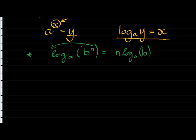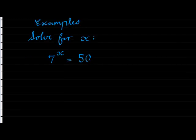Here's an example where we're asked to solve for x. The question gives us 7 to the power of x is equal to 50. Now we know 7 to the power of 2 will be equal to 49, but this is 50. So x will be bigger than 2, but not much bigger.